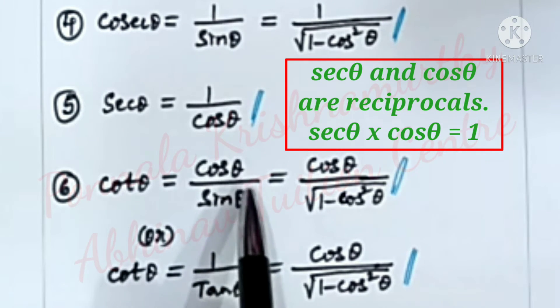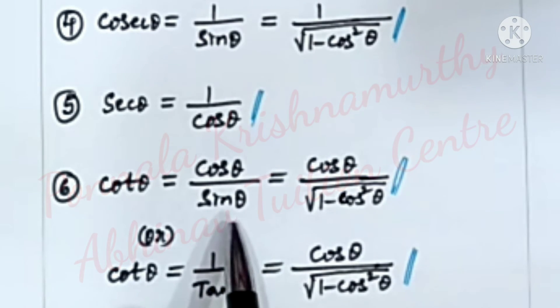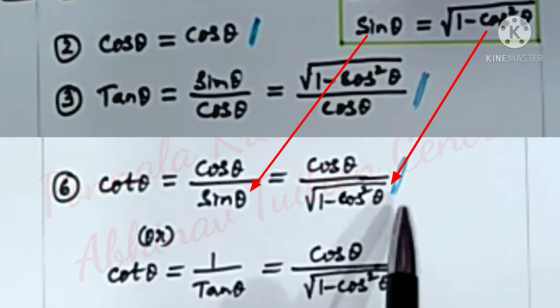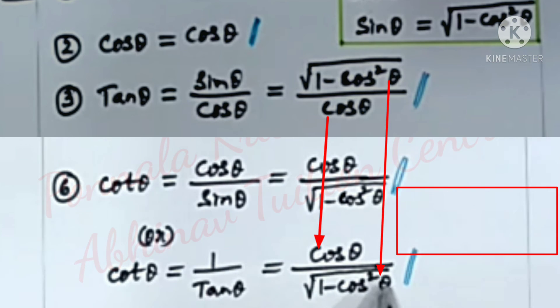Cot theta is equal to cos theta by sin theta, that is equal to cos theta by under root 1 minus cos square theta, or cot theta is equal to 1 by tan theta, that is equal to cos theta by under root 1 minus cos square theta.